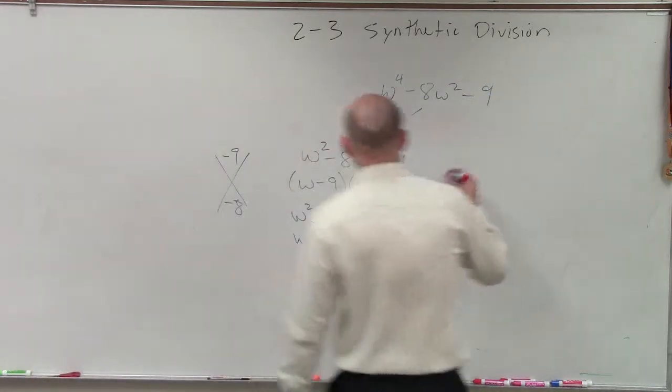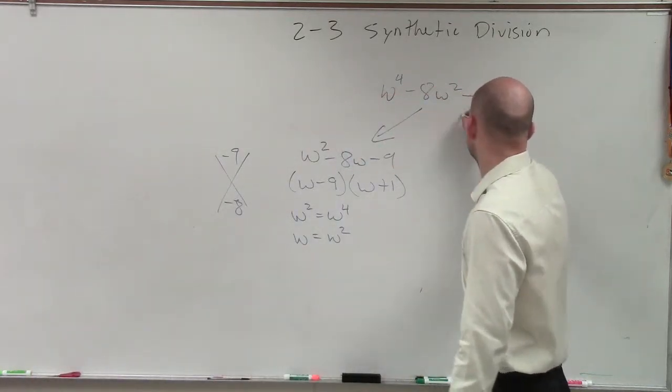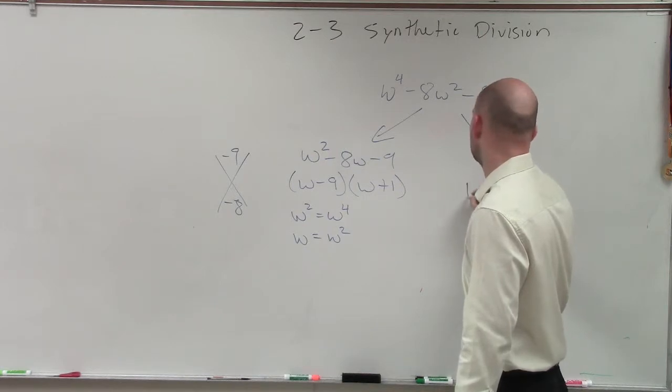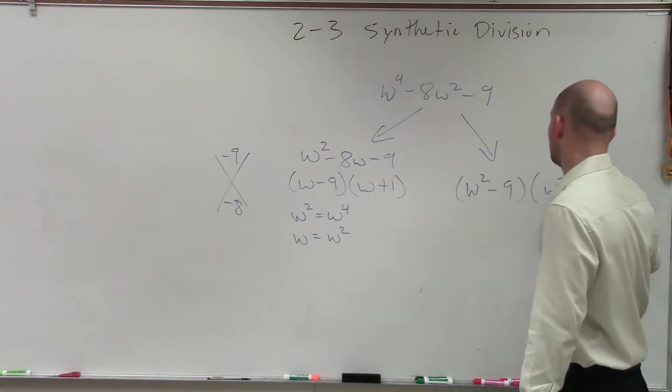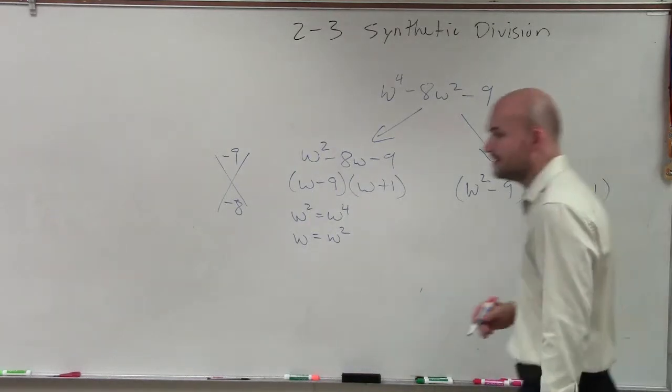So therefore, I can just say that this would be, my factored form is now going to be w squared minus 9 times w squared plus 1. And guys, if anything else, check your work, right?